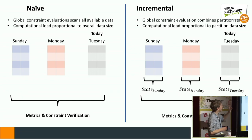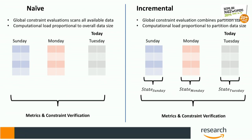Let's look at the naive implementation first. Say today is Tuesday. We have applied DQ on Sunday and on Monday, and the output of those computations were always the metrics and the outcome of our unit tests — whether they succeed or fail. In the naive computation, on Tuesday you might be interested in the data quality of Sunday, Monday, and Tuesday combined — just union all of that data. In the naive approach, you would need to re-scan all the data, which can be arbitrarily costly because the raw data can be huge. Ideally, we want to save ourselves some computations on the data if we can.